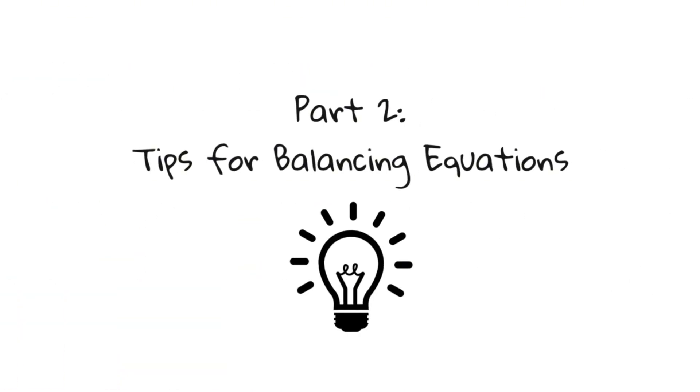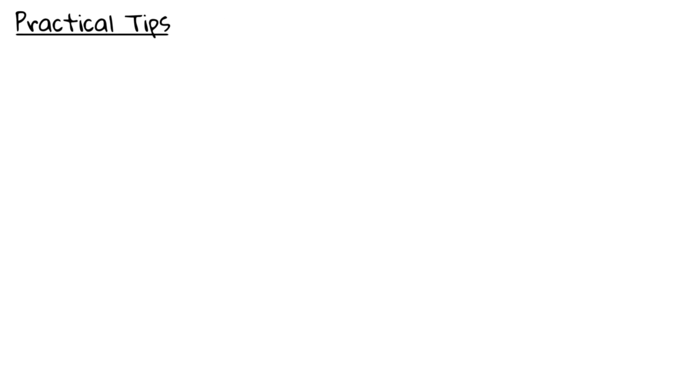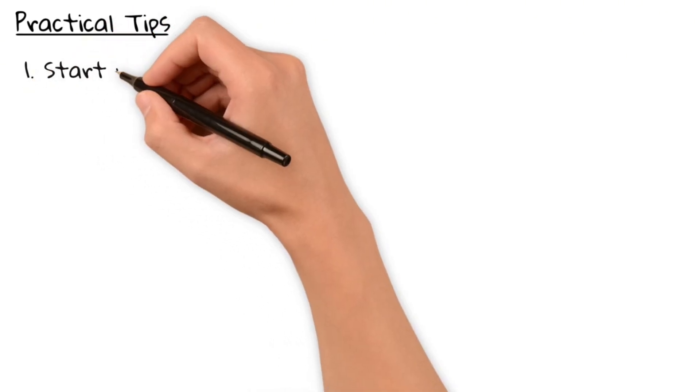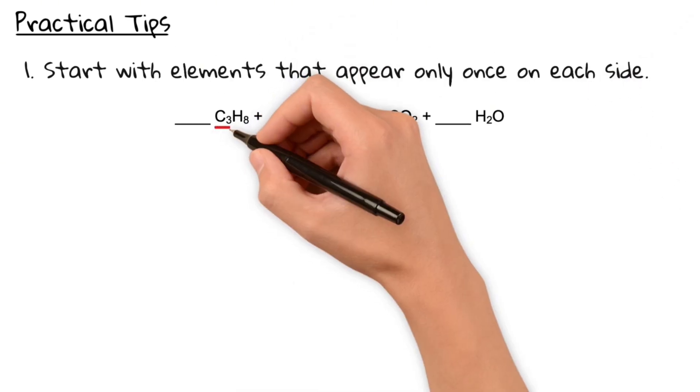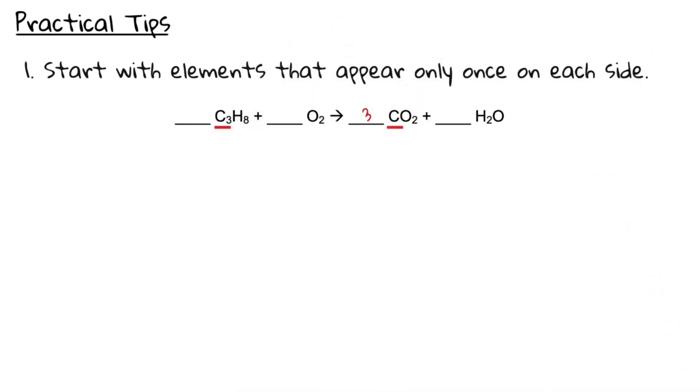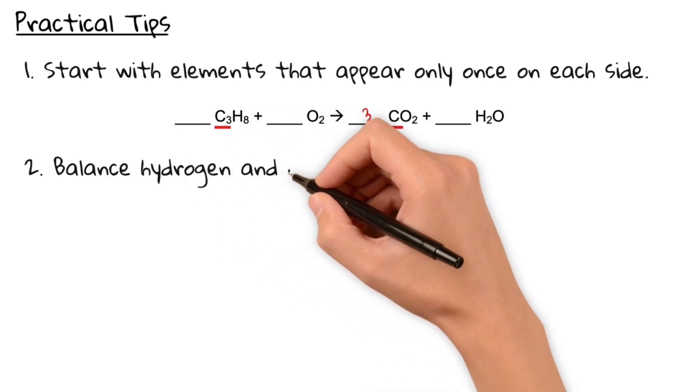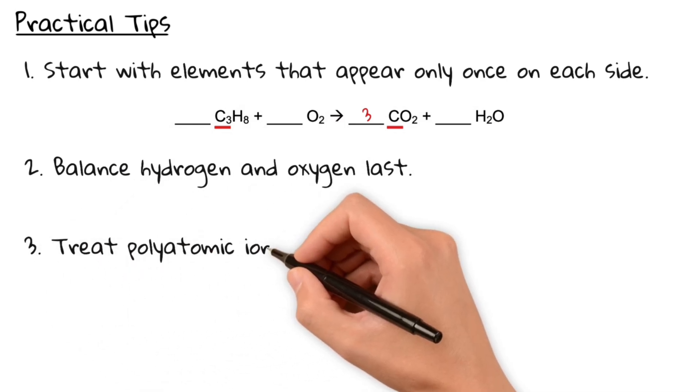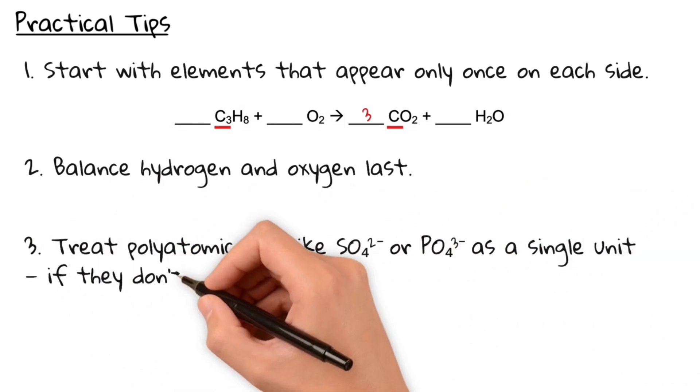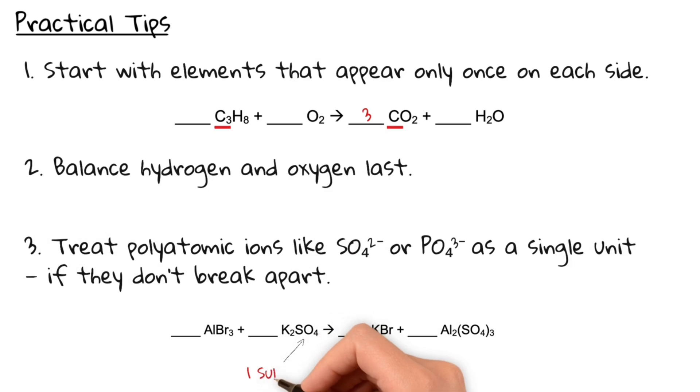Before we dive into our main example, here are three tips to make balancing easier. Firstly, start with elements that appear only once on each side. Secondly, balance hydrogen and oxygen last. They're usually involved in multiple compounds and can cause confusion. And lastly, treat polyatomic ions like sulfate and phosphate as single units. This can save a lot of time.